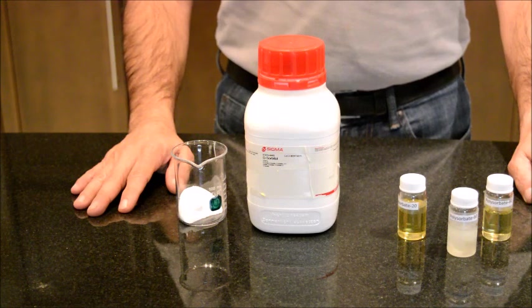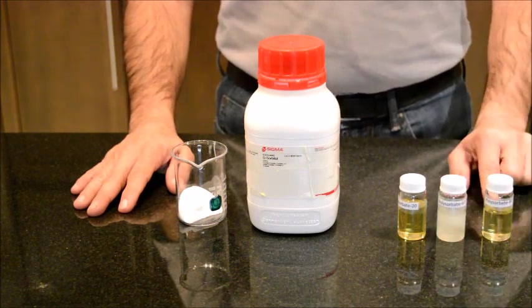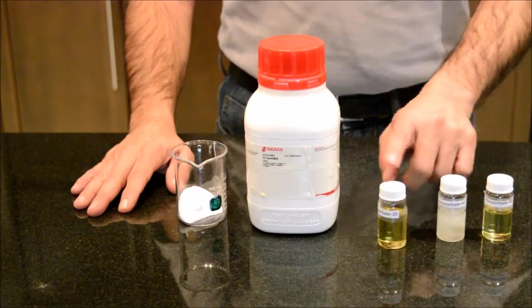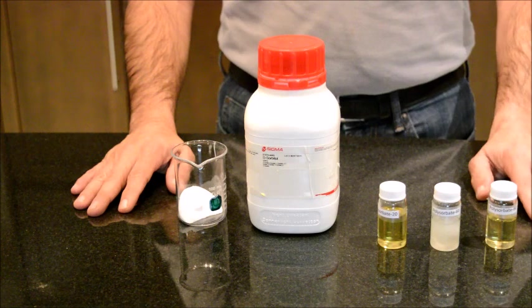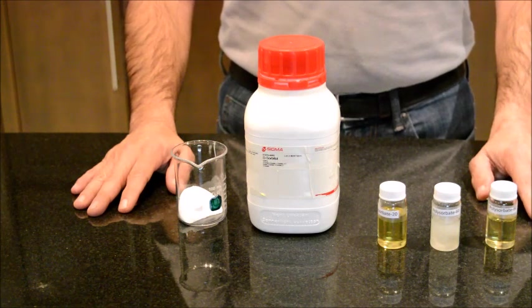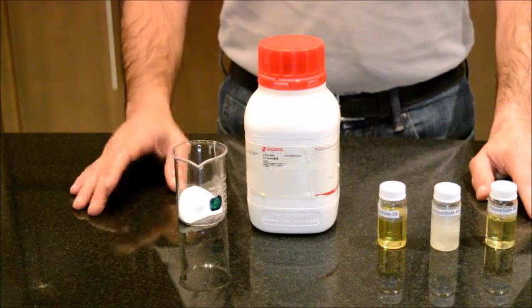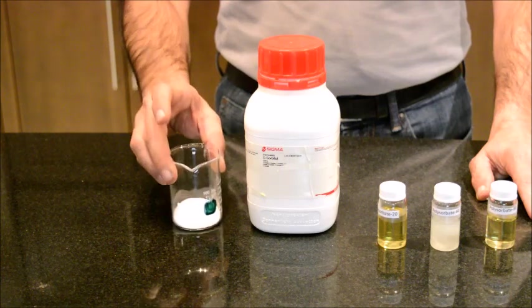What I have here are three different types of polysorbates: polysorbate 20, polysorbate 60, and polysorbate 80. These surfactants or emulsifying agents are manufactured using sorbitol, which is a monosaccharide and sweet, along with ethylene oxide and fatty acids.